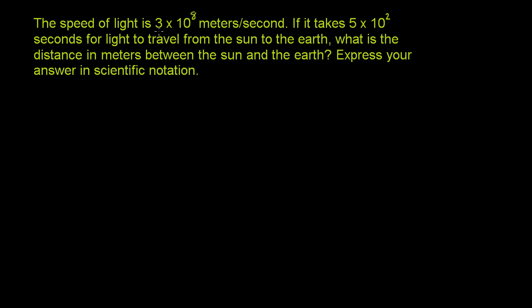The speed of light is 3 times 10 to the eighth meters per second. If it takes 5 times 10 to the second, or 5 times 100, seconds for light to travel from the sun to the earth, what is the distance in meters between the sun and the earth? Express your answer in scientific notation.